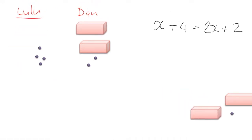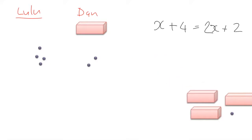Lulu's box goes, and to be fair I must take a box from Dan as well. What have I done equation-wise? I have taken Lulu's box, so I need to take Dan's box away too. What's left? Lulu has four sweets and Dan has the amount of sweets in a box plus two sweets.